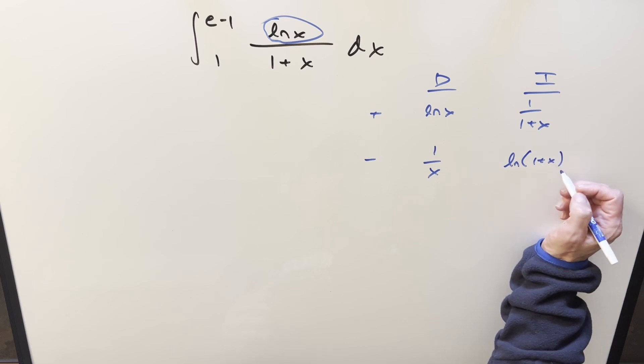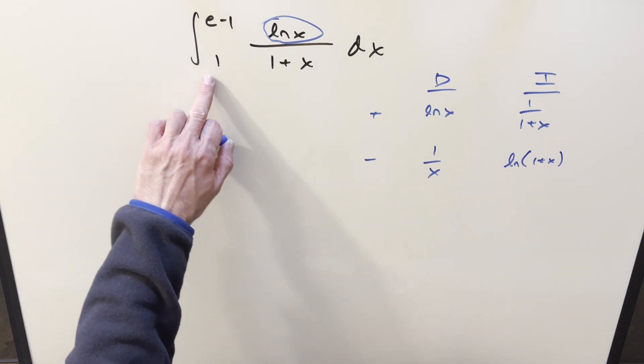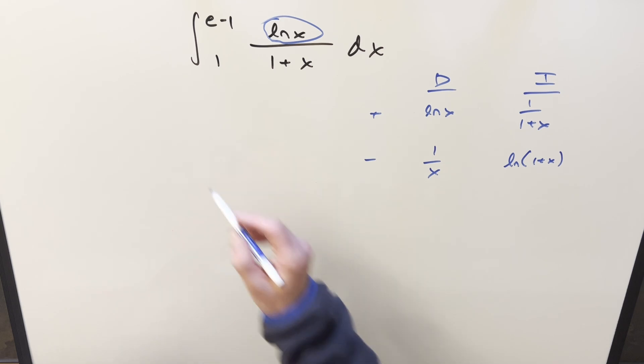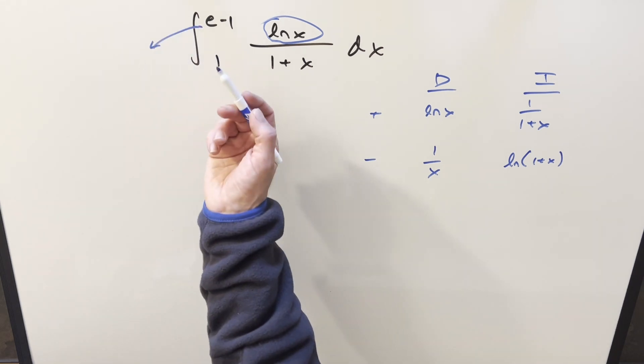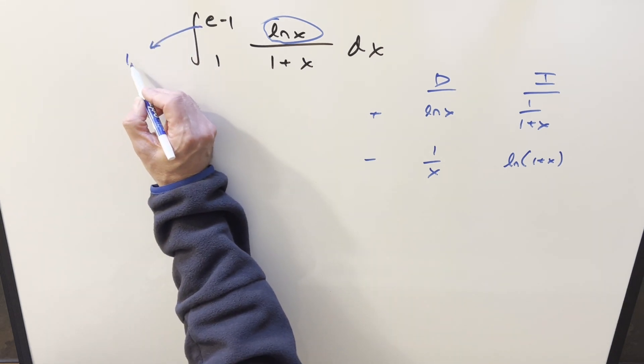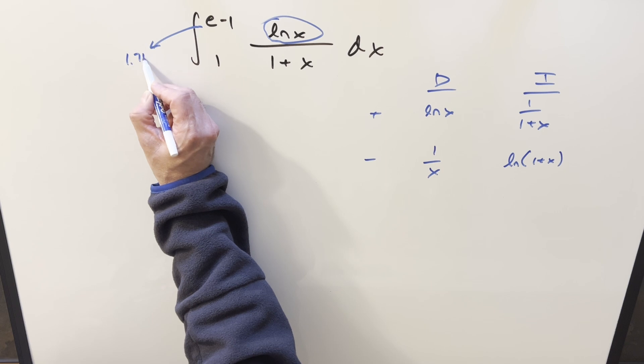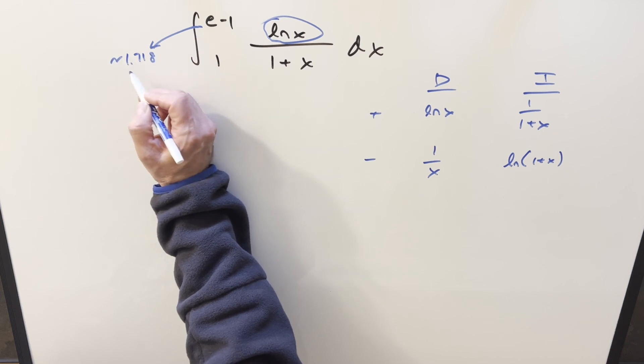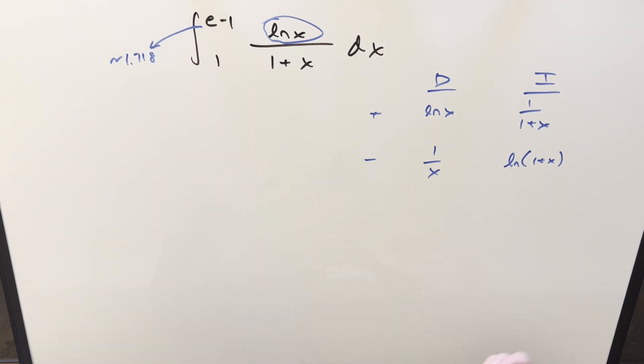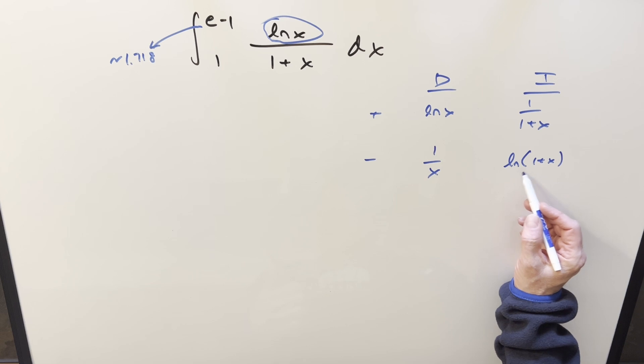I'm going to drop the absolute value. The reason is because if you look at our bounds, 1 and e minus 1, if e is like 2.718, then this number is going to be something like around 1.718. Although it doesn't really matter exactly what it is, the point is this stuff here is always going to be positive, and that's why I can drop the absolute value on it.